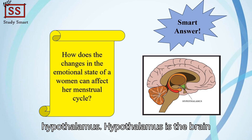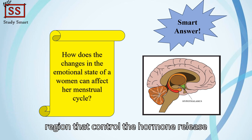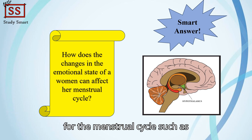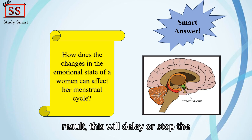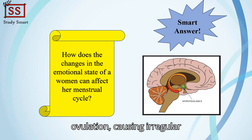The hypothalamus is the brain region that controls hormone release for the menstrual cycle, such as estrogen and progesterone. Emotional stress can affect the hypothalamus, which as a result can delay or stop ovulation, causing irregular menstruation.